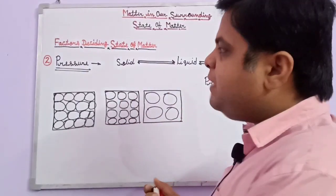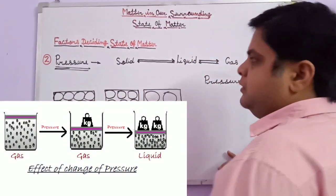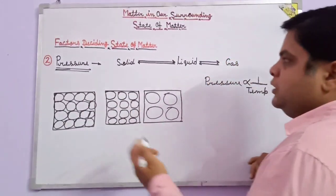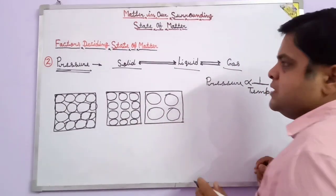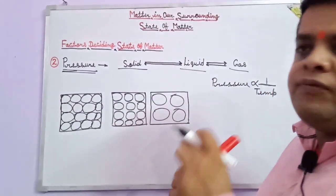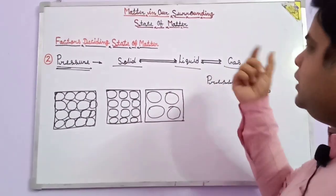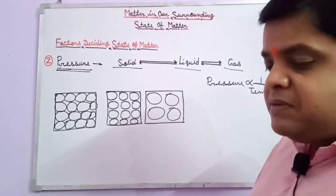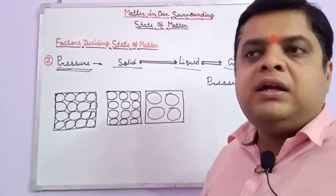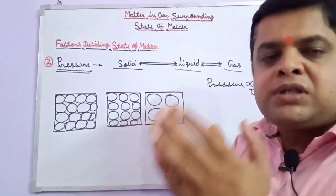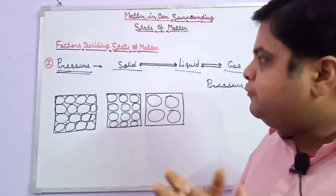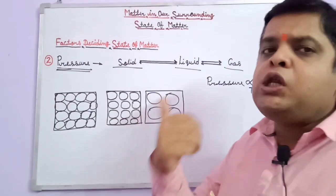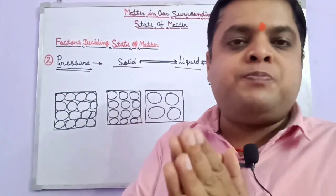Another factor deciding the state of matter is pressure. Just like temperature, pressure is also an important factor in the state of matter — changing solid to liquid and liquid to gas. After increasing temperature, the kinetic energy of the molecules increases. By this condition, the intermolecular force weakens and intermolecular space increases, and one state can change to another.